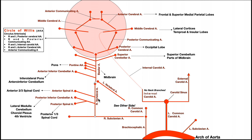These vertebral arteries — the right and the left — are going to fuse together into the basilar artery. We'll come back to this in a minute because we first need to talk about several branches that come off of the vertebral arteries.